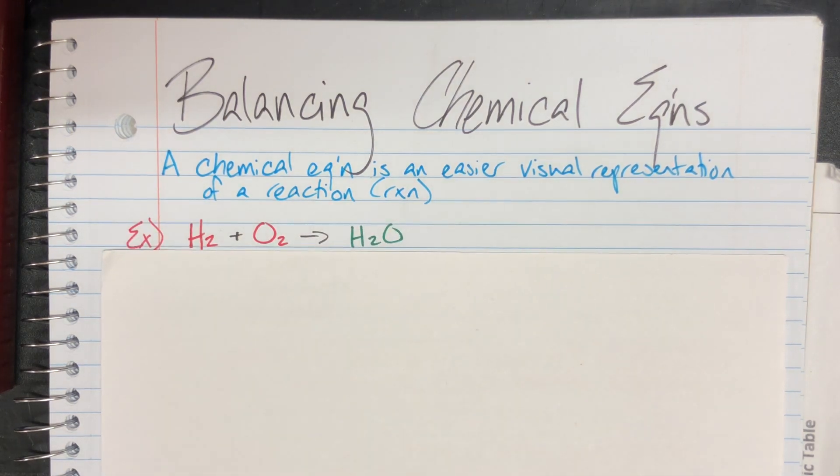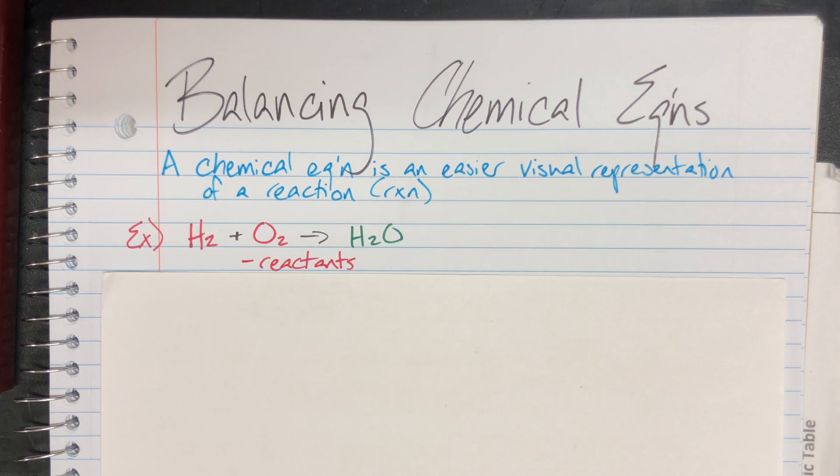My first example reaction is H2 plus O2 going to H2O. I'm going to show you the pieces of the reaction and what they actually are. The red pieces, the H2 and the O2, are on my left hand side. Those are going to be my reactants.